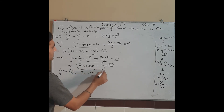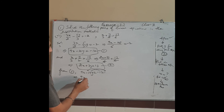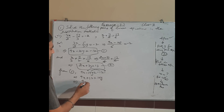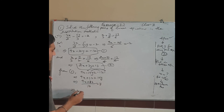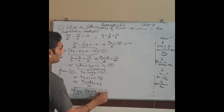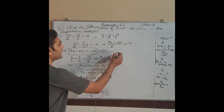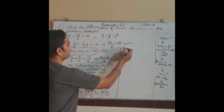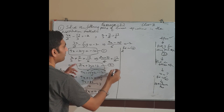From equation 1: 9x − 10y = −12. Shift the −10y term: 9x + 12 = 10y, so y = (9x + 12)/10. Give it number 3. Now put this y value into equation 2: 2x + 3·[(9x + 12)/10] = 13.